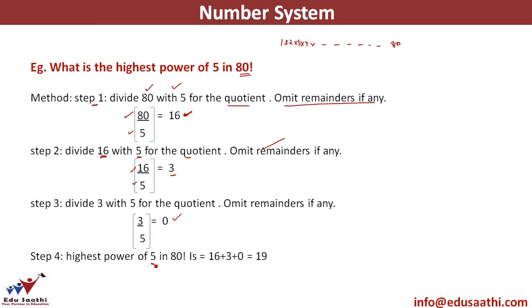The highest power of 5 in 80 factorial will be the sum of all the 3 quotients that you have obtained. 16 plus 3 plus 0 which gives you an answer of 19. This is the steps that you follow in order to find out the highest power of a given number in a factorial.